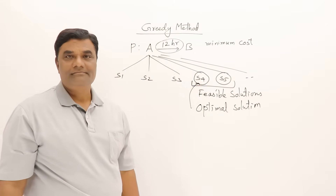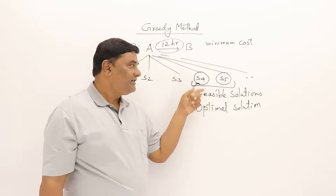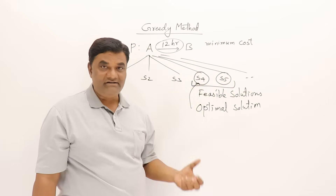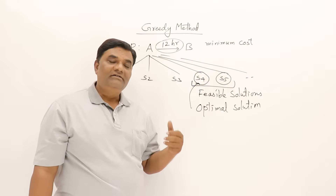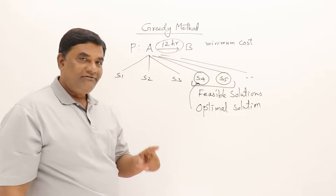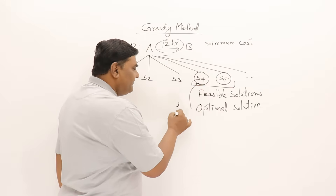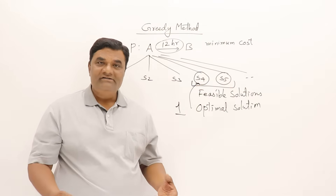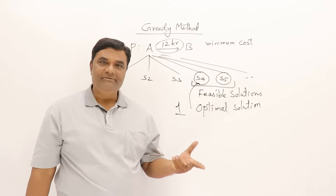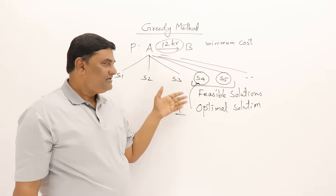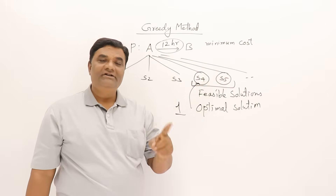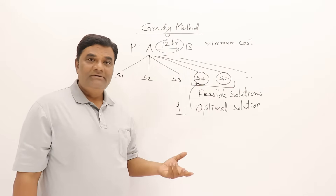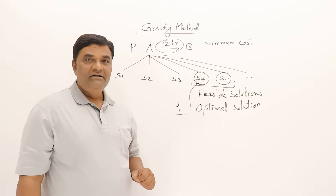Suppose going by train is the minimum cost — then that is called the optimal solution. An optimal solution is one which is already feasible and also gives the minimum cost, i.e., the best result. There can be only one optimal solution — there cannot be multiple. There can be more than one feasible solution, but there will be only one optimal solution.